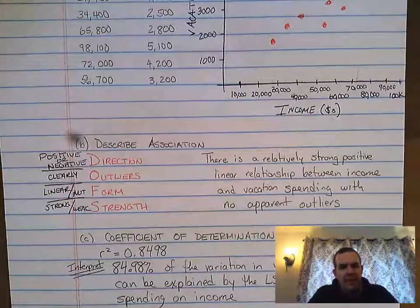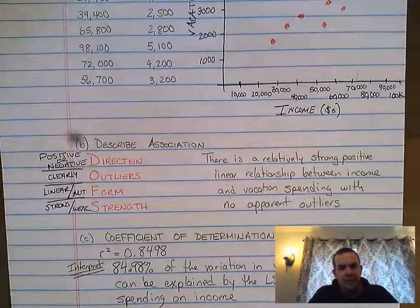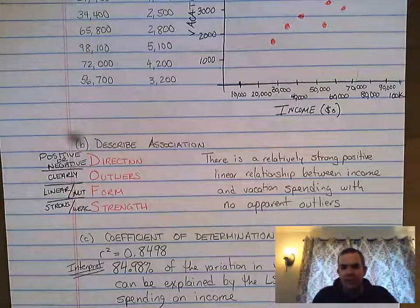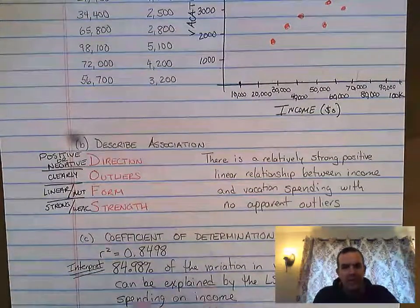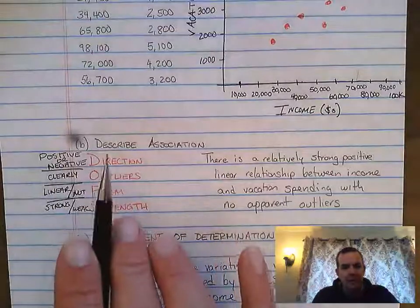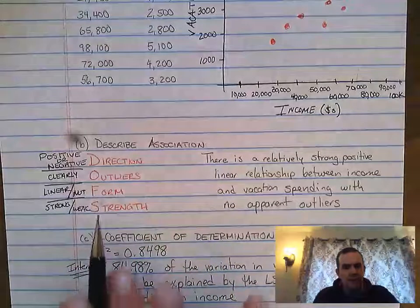We've moved on to Part B, and Part B actually asked us to describe the association in the graph above. So the way that we need to do that is we need to use the acronym DOFS, D-O-F-S.